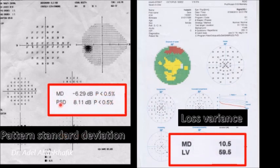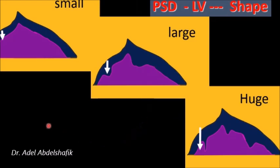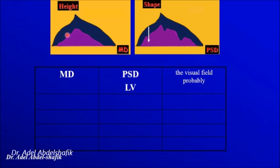By looking at the mean deviation together with the pattern standard deviation or loss variance, we can understand what is happening. If the standard deviation or loss variance is high, some points are far from the rest of the group — even a single markedly depressed point will make it very large. If all points are similar, the standard deviation is small. In summary: the mean deviation gives information about the height of the field, while the standard deviation or loss variance gives information about the shape of the field.